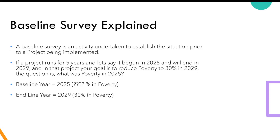When you do a baseline survey, you're simply trying to establish what poverty looked like before the project started so that you are able to monitor the change. For example, if you have a five-year project starting in 2025 and scheduled to end in 2029, and your goal is to reduce poverty to 30% by 2029, you need to know what the current level is. Maybe it's already at 30%, and you'd be implementing an intervention with a target that has already been achieved — and that would cause a lot of confusion.